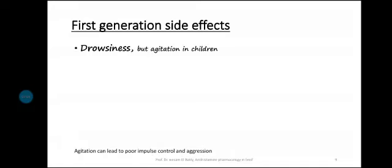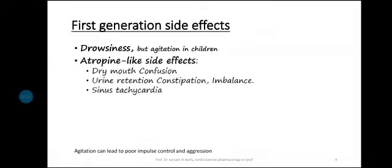First generation side effects: CNS — most cross the blood-brain barrier due to lipophilicity, leading to drowsiness and sedation as a side effect. However, paradoxically, they can cause agitation in children. They also have atropine-like (anti-muscarinic) side effects, similar to atropine side effects.